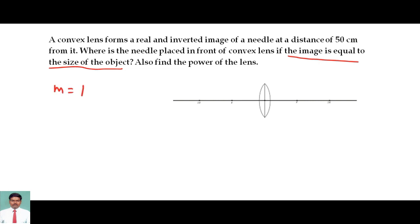Now the image is formed at a distance of 50 cm from the optic center. So the V value is given as 50 cm and in this case it is going to be an inverted image. So the magnification value is going to be minus 1.